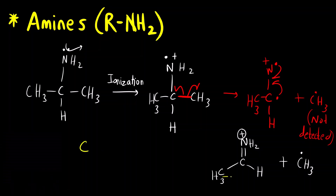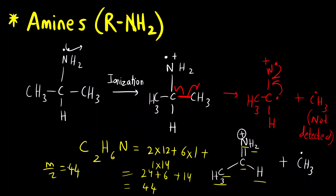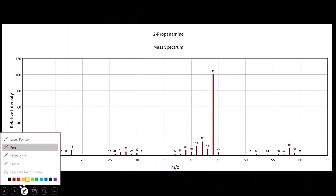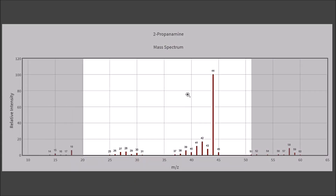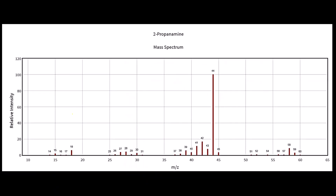For the m/z of the charged fragment from 2-propanamine: we have two carbons, six hydrogens, and one nitrogen — C₂H₆N. So: (2×12) + (6×1) + (1×14) = 24 + 6 + 14 = 44. At m/z = 44, we should get the base peak. Looking at the mass spectrum of 2-propanamine, the base peak is indeed at 44, confirming our answer.